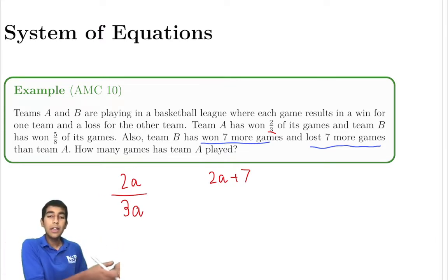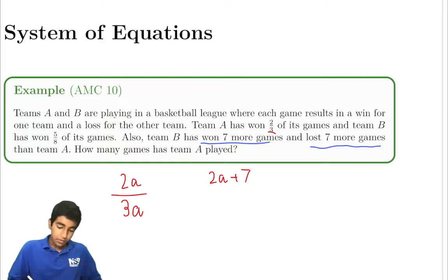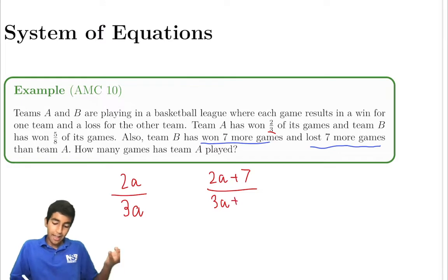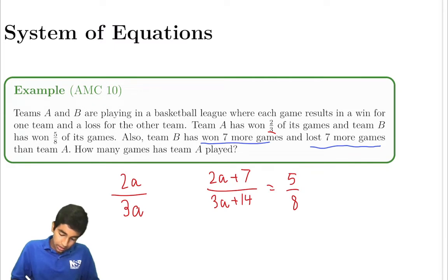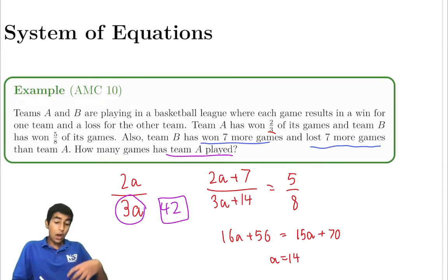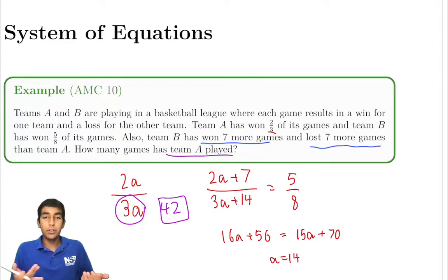So a total of 3A plus 14, and this is five over eight. Cross multiply: 16A plus 56 equals 15A plus 70, A equals 14. But A is not the number of games Team A has played, it's 3A. Forty-two is our answer because it's 2A over 3A total games. So Team A has played 42 games.